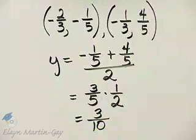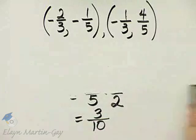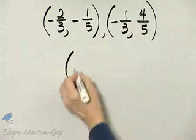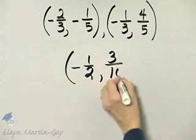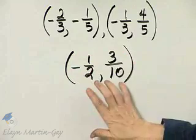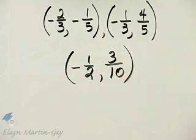So what is our midpoint? The midpoint is the point negative 1 half, 3 tenths. That is the midpoint of the line segment where these two are endpoints.